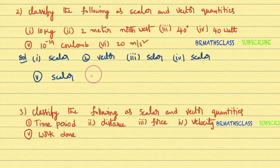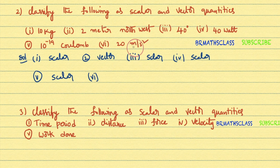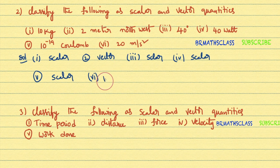Sixth bit: 20 meters per second squared. In physics, meters per second squared are the units of acceleration. We already learned in the beginning that acceleration is a vector quantity. So 20 meters per second squared represents acceleration, which is a vector. I hope you understand this.